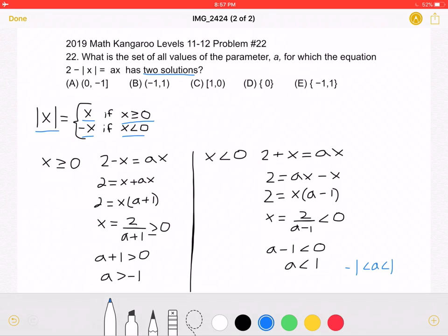If x is greater than or equal to 0, which is this case, meaning that absolute value of x would be equal to x, we can put x instead of absolute value of x in this equation to get that 2 minus x is equal to Ax.